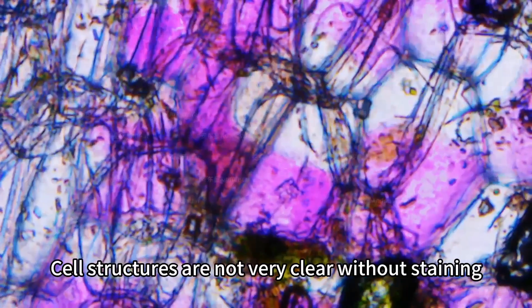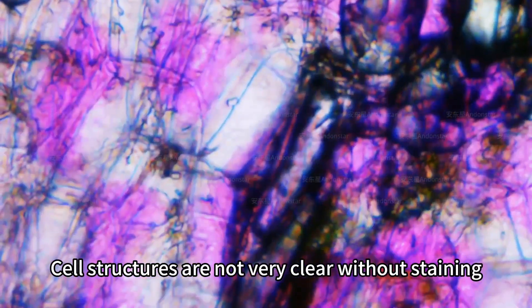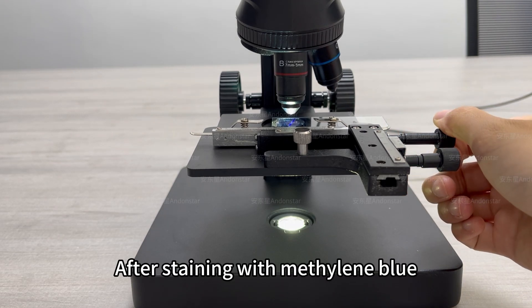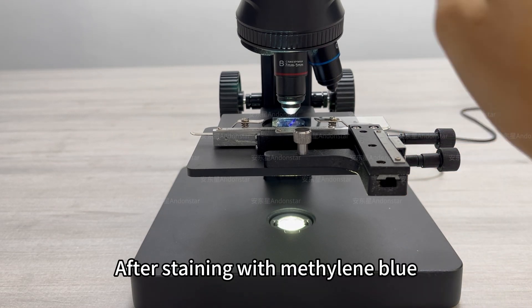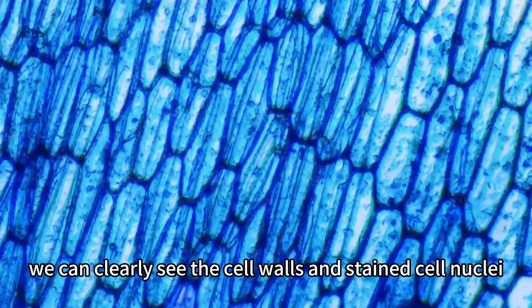Cell structures are not very clear without staining. After staining with methylene blue, we can clearly see the cell walls and stained cell nuclei.